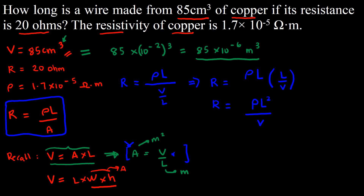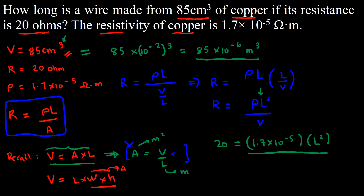Now let us substitute our values. We need to solve for L. So we have R equal to 20, which equals resistivity 1.7 times 10 to the power of negative 5, multiplied by L squared, divided by the volume 85 times 10 to the power of negative 6 meters cubed.